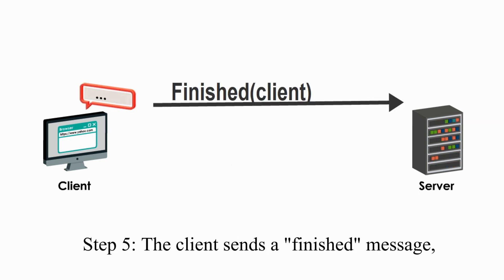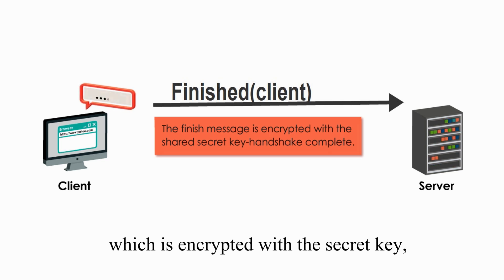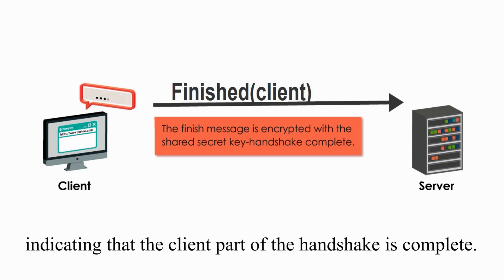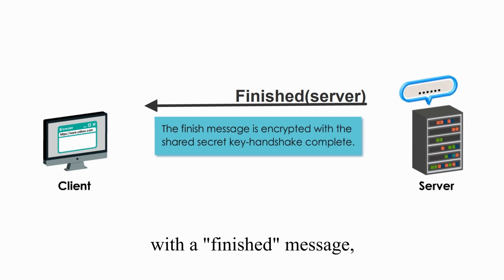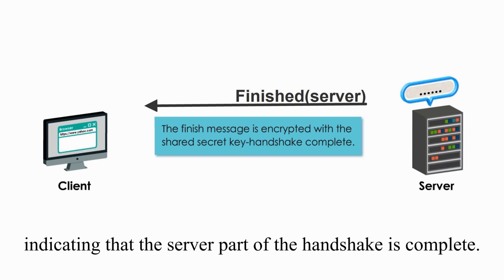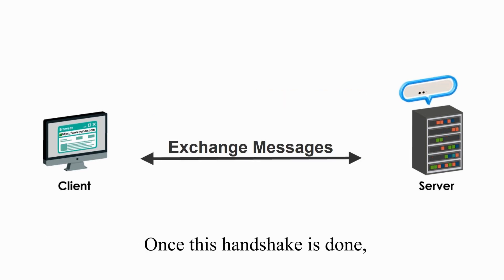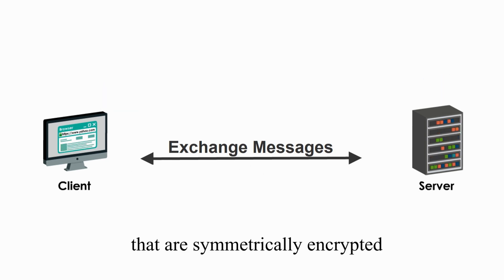Step 5: The client sends a finished message which is encrypted with the server's public key. Step 6: The server responds to the client with a finished message which is encrypted with the secret key, indicating the server part of the handshake is complete. Once this handshake is done, the server and client can now exchange messages that are symmetrically encrypted with the shared secret key.